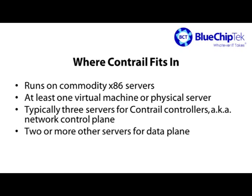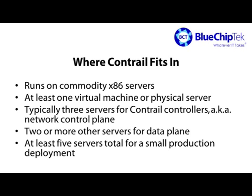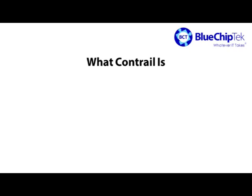You'll also need at least two other servers to run the pieces of Contrail that do the work of operating networks and moving packets around. In Juniper parlance, that's the data plane. Bottom line, you need at least five physical servers to power a highly available Contrail environment. Contrail runs on commodity x86 servers — but what is it?